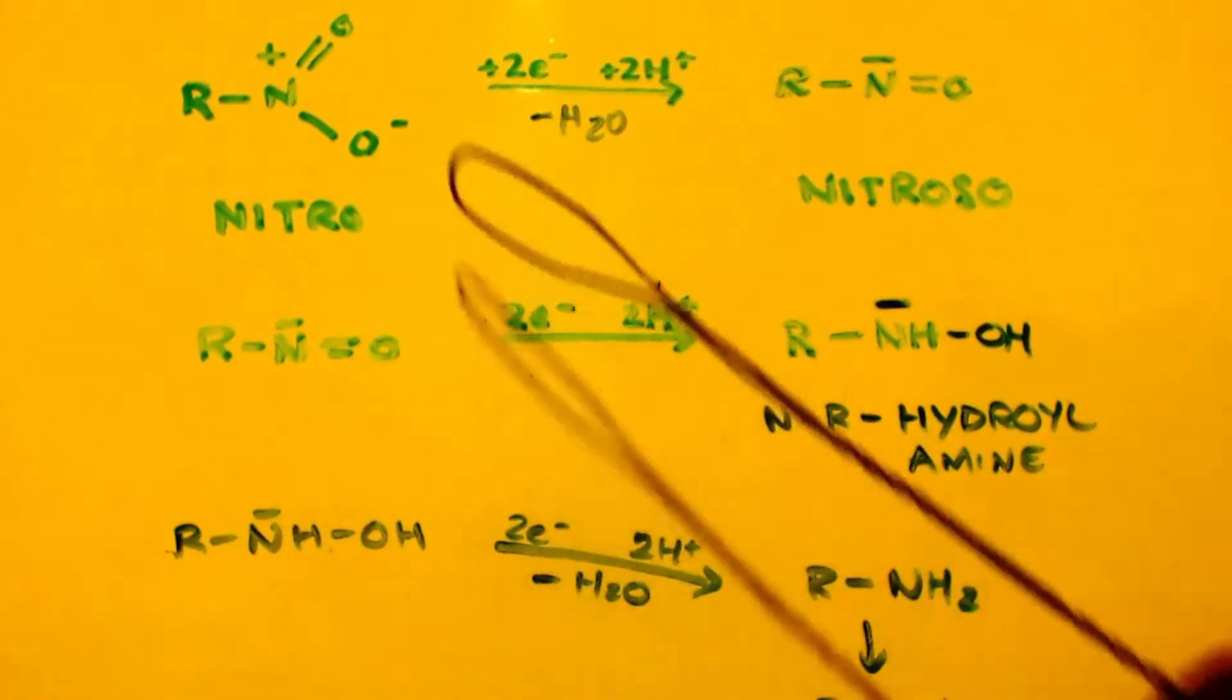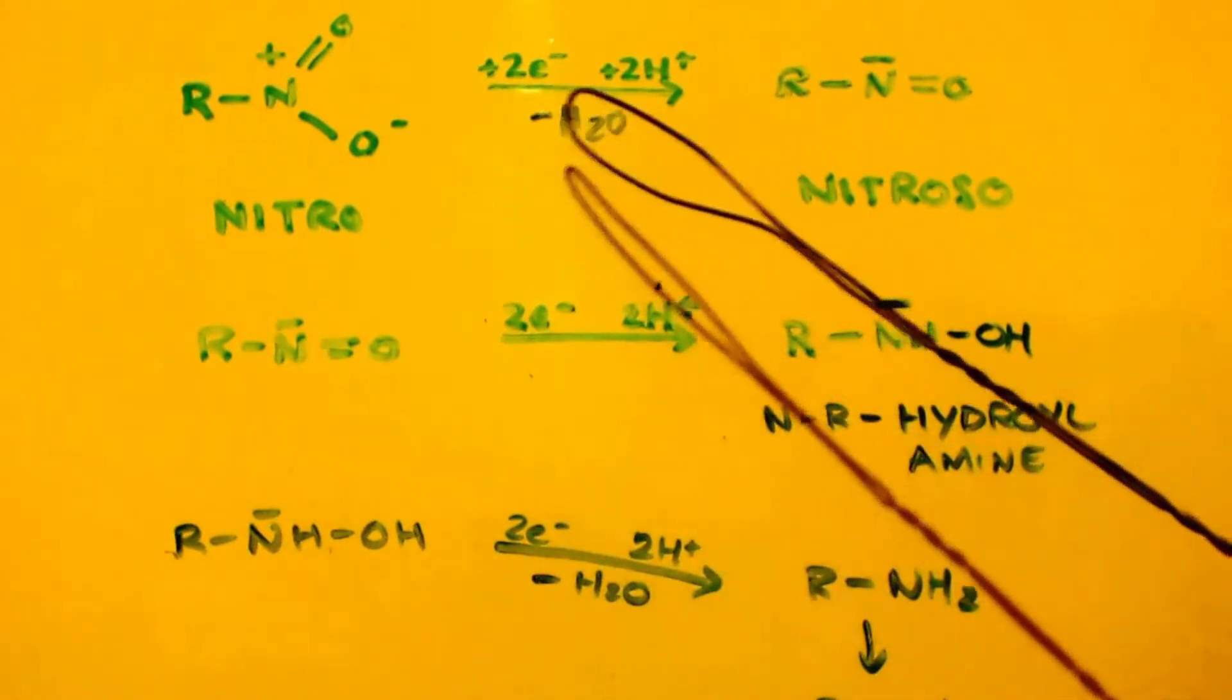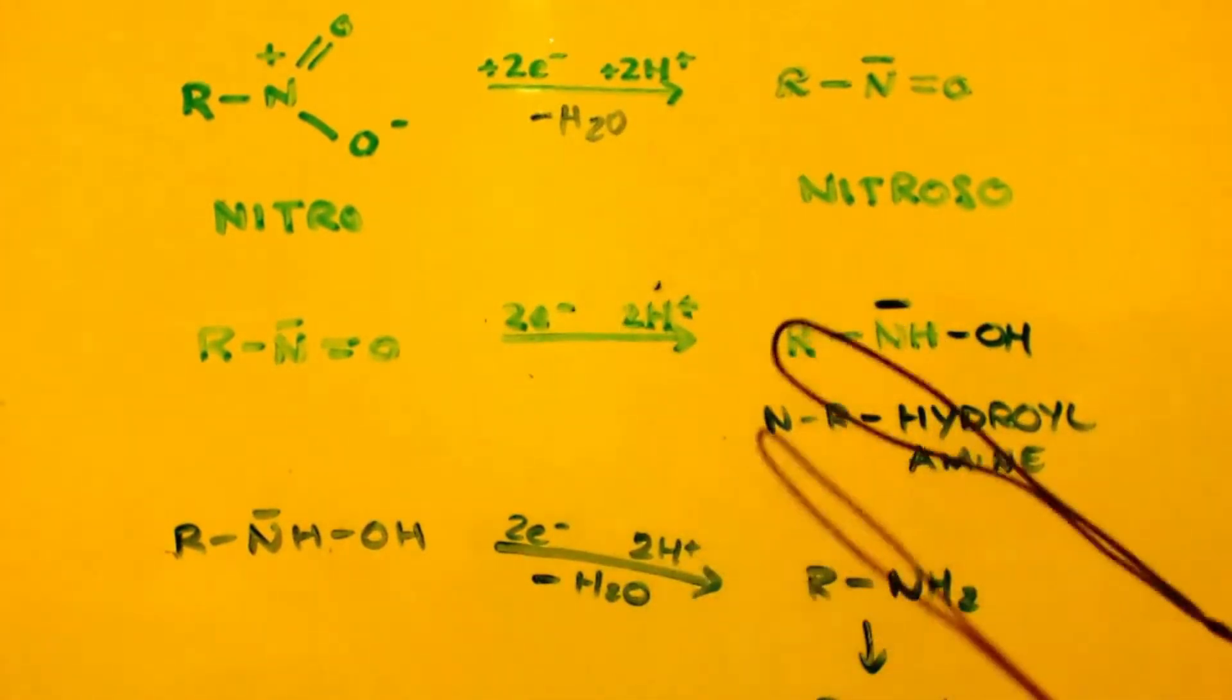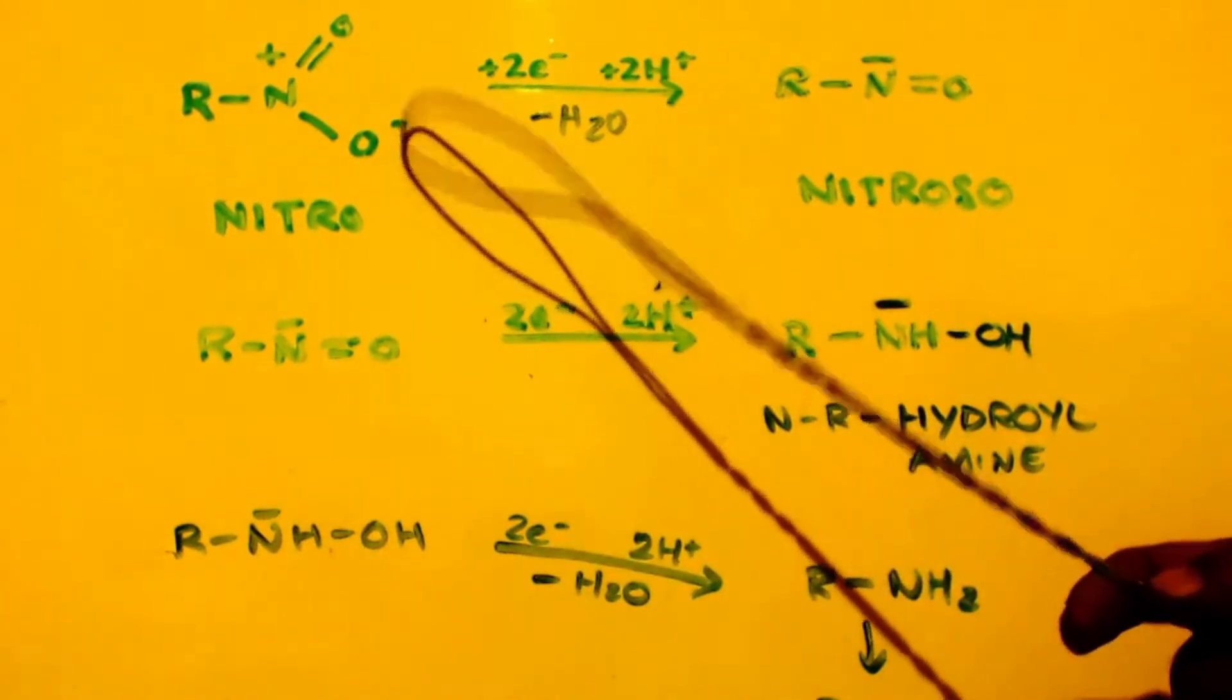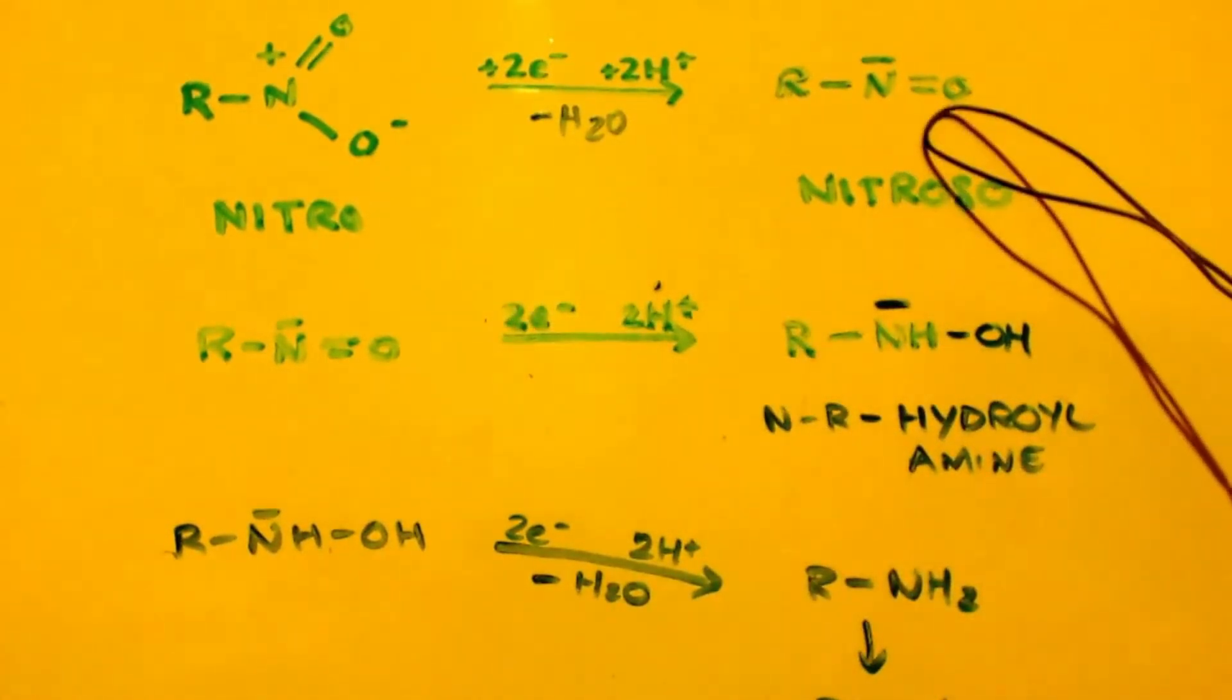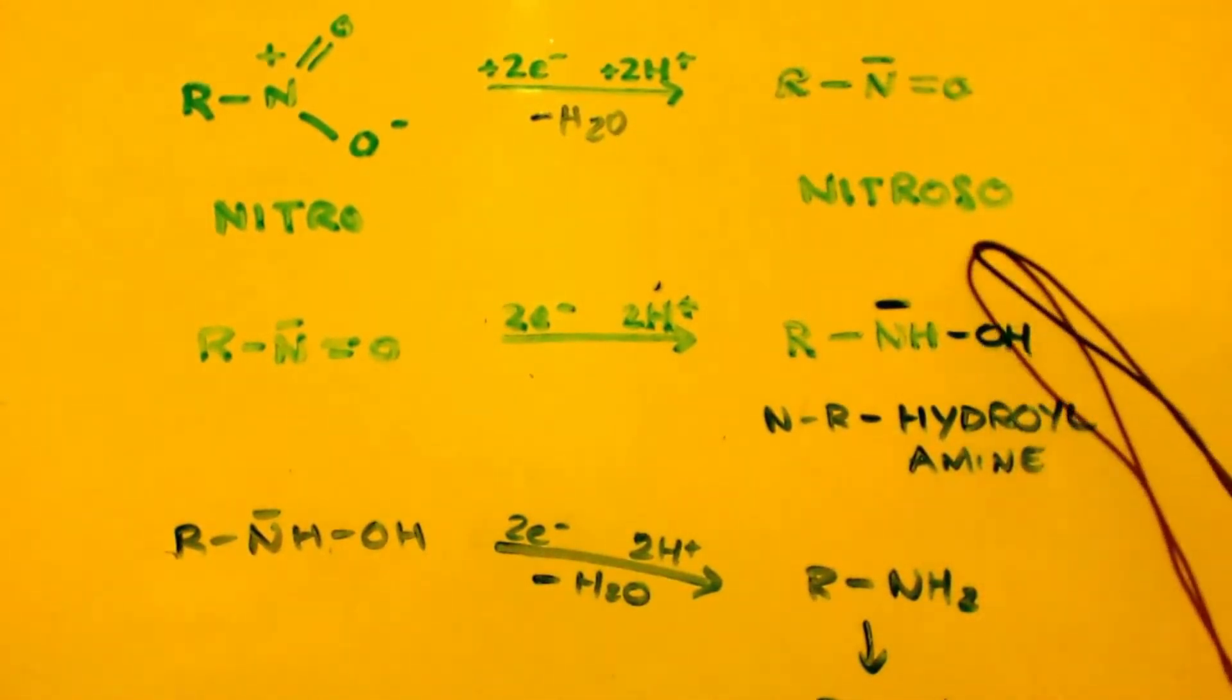So anyways, you got your nitro group. The R would be a methyl group in our case. And you're going to add two electrons and two protons and remove a water. You're going to add two protons here and this is going to come off and you wind up with this. Now instead of it being positive, it's negative, right? And that's called a nitroso group.